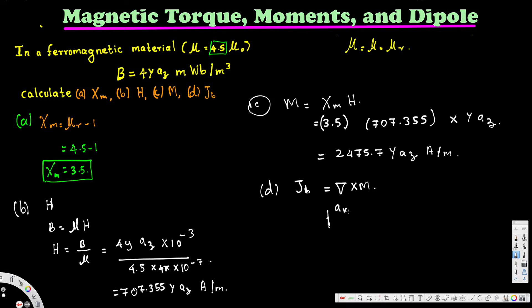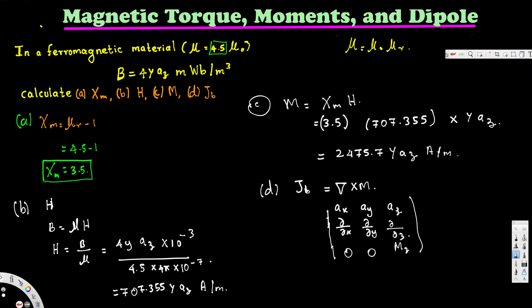The easiest method to compute the curl is the determinant method. We set up the determinant with ax, ay, az in the first row; partial derivatives with respect to x, y, and z in the second row; and the M components in the third row. Since magnetization only has a z-component, the x and y components are zero, and the z-component is Mz.